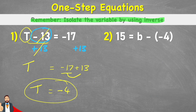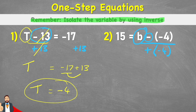Let's look at this second question. This time I have 15 equals b subtract negative 4. So my b, my variable, is connected to a subtract negative 4. Here's our subtraction — how do I get rid of the subtraction? I'll use my inverse. So on this side I must input a plus negative 4. But remember, if I put that on one side I need to put it on the other side too. Now I can look back at this right-hand side and see that my subtract negative 4 and my plus negative 4 are going to cancel each other out.